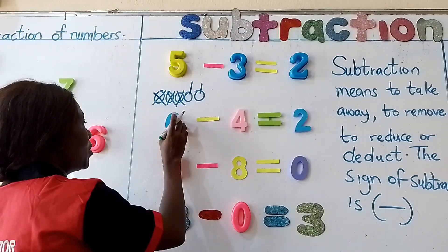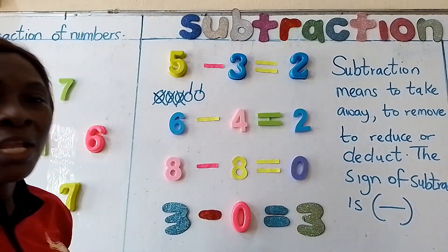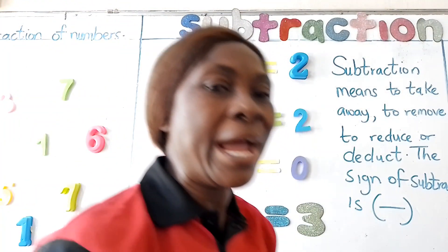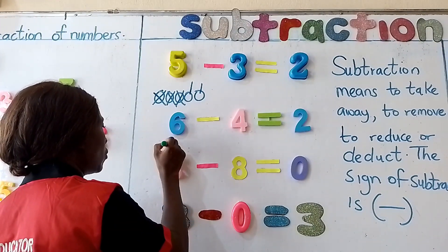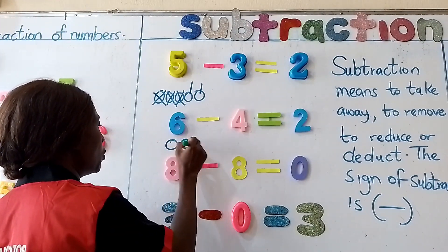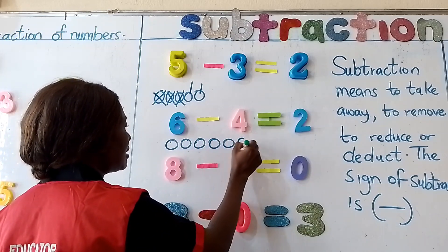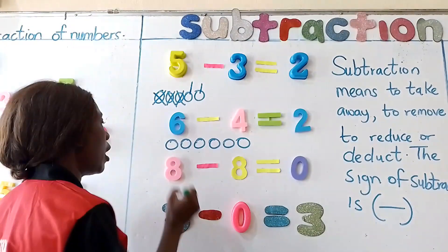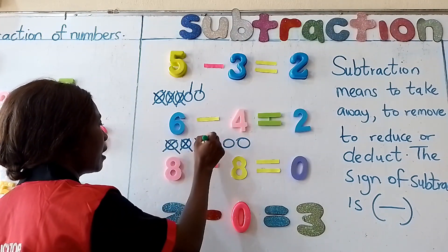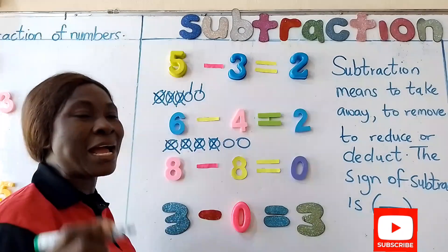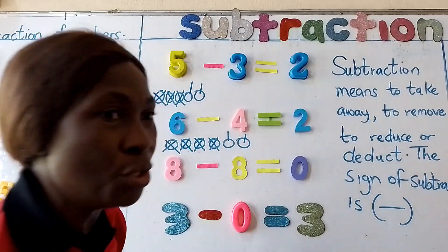The next one says six take away four. Six take away four. Now I'm going to make use of my counters again. One, two, three, four, five, six. Take away four — one, two, three, four. How many do I have left? One, two. My answer is two.